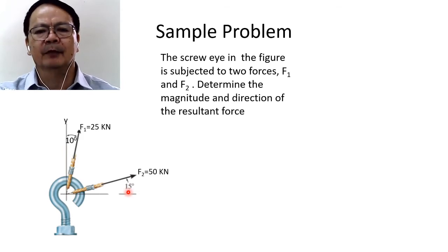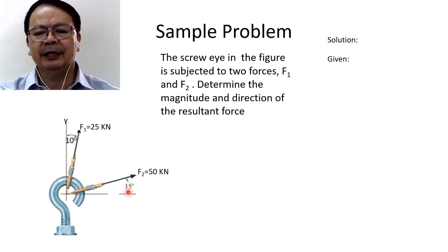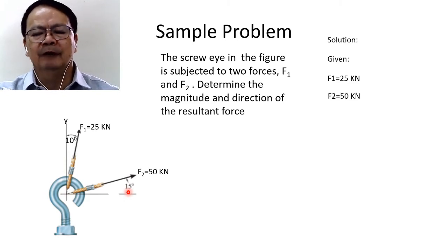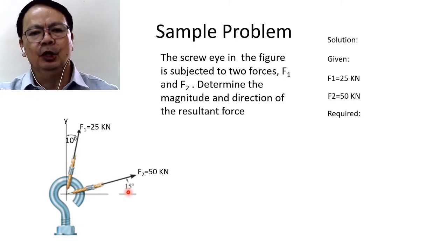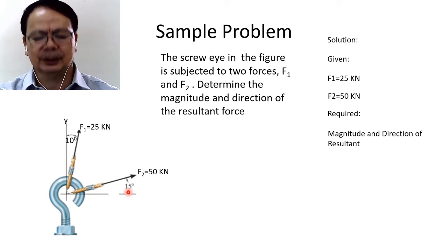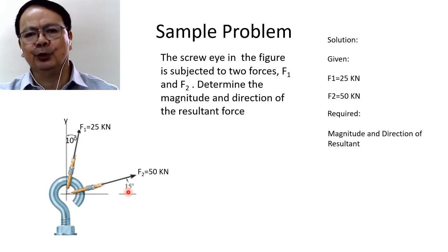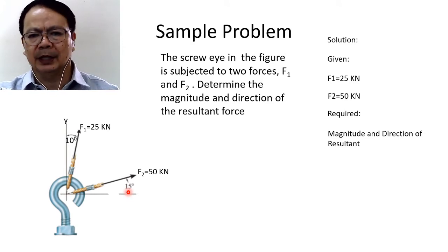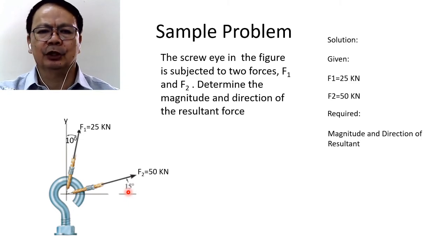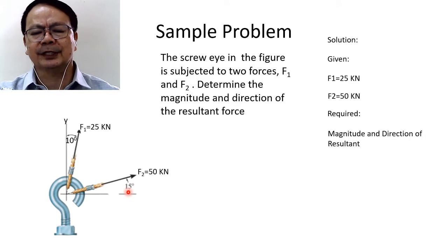We are required to solve for the magnitude and direction of the resultant of these two forces. Let's start by identifying what is given: the first force has a magnitude of 25 kilonewtons and the second force has a magnitude of 50 kilonewtons. The first thing we should do after identifying the givens and requirements is to draw a free body diagram.